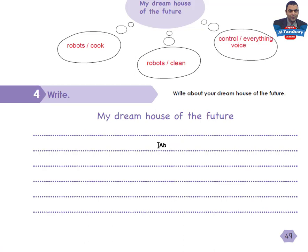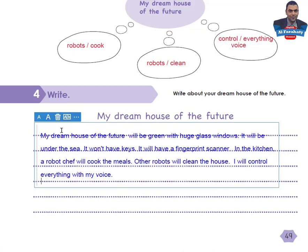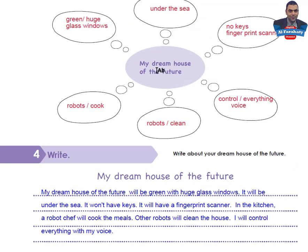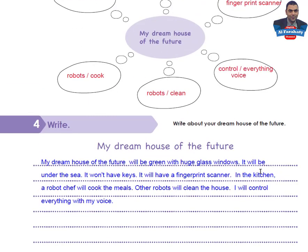Hello again. Thank you for writing. This is my writing about my dream house of the future — I used the mind map to write it. My dream house of the future will be green with huge glass windows. It will be under the sea. It won't have keys — it will have a fingerprint scanner. In the kitchen, a robot chef will cook the meals. Other robots will clean the house. I will control everything with my voice. If you didn't write, you can imitate this. Thank you — by this we've achieved the aims of this lesson. Thank you for following me. Goodbye.